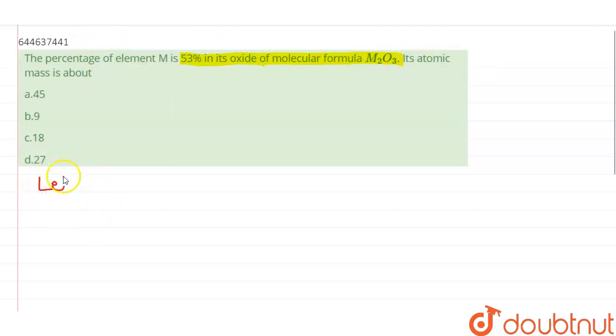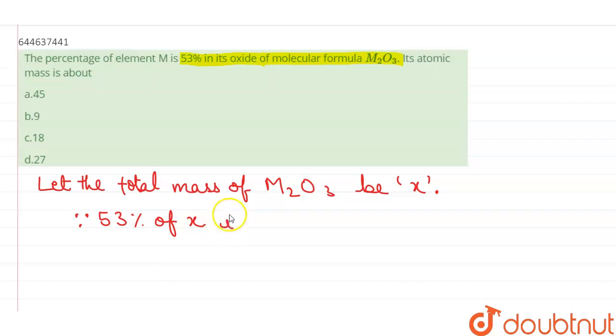So let the total mass of M2O3 be x. Since 53 percent of x is metal,